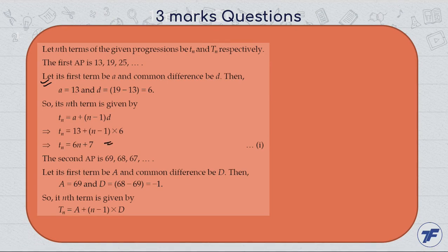For the second AP, let capital Tn equal capital A plus (n-1) times capital D. We use capital letters to denote the second AP because the values will not be the same.